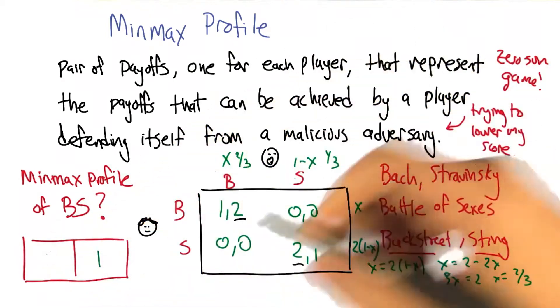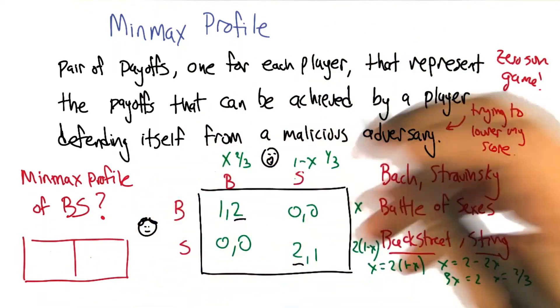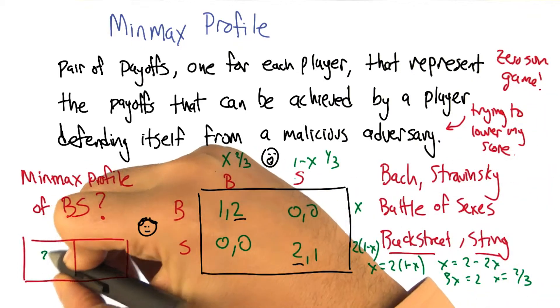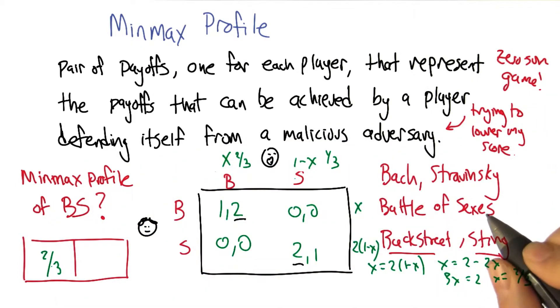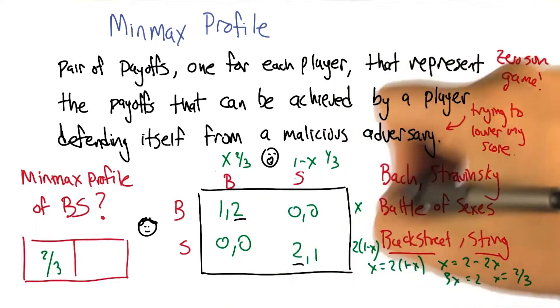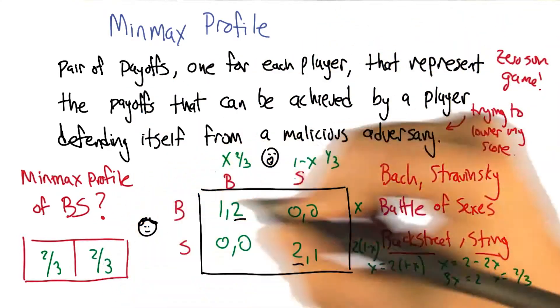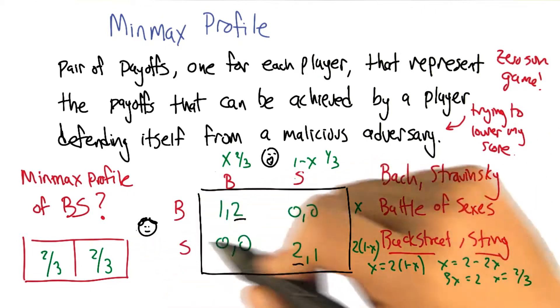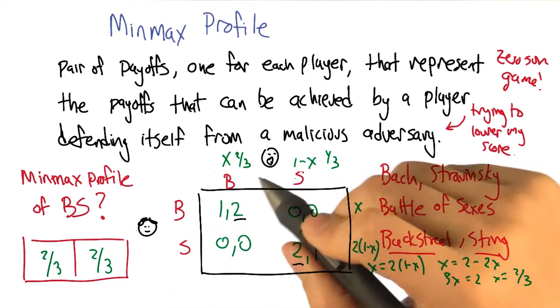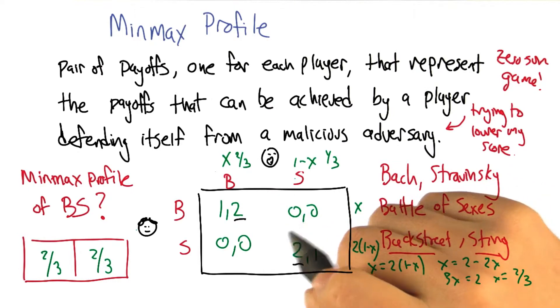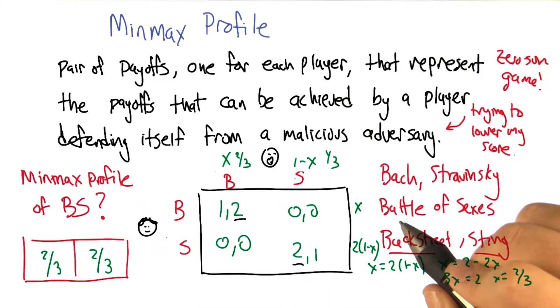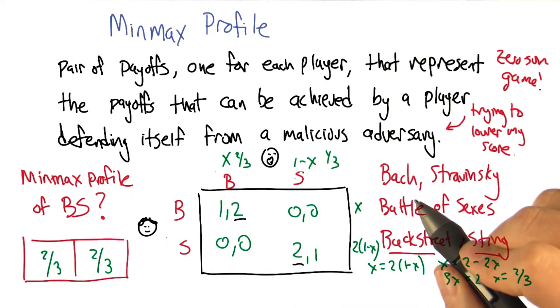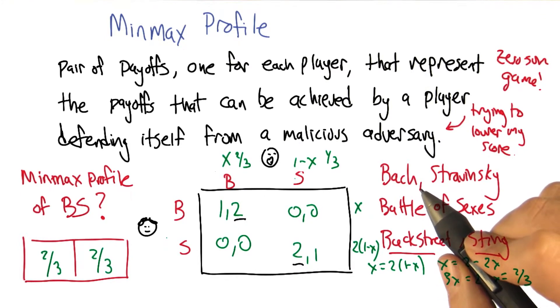In fact, Smooth, by being malicious and stochastic, can actually force things down to two thirds. And things being symmetric as they are, Curly can do the same. So basically, Curly can behave in such a way that even against a malicious adversary, he could guarantee himself a score of two thirds. Yeah. A malicious, possibly mixed adversary. That's right.